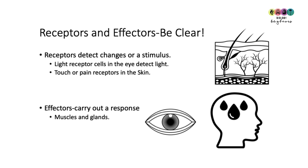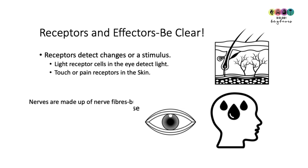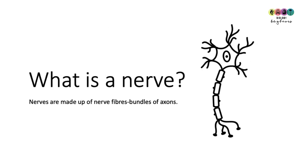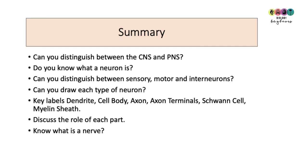Make sure you know what receptors and effectors are. Receptors detect the changes or the stimulus, whereas effectors carry out the response — they're generally muscles or glands. Finally, just know what a nerve is: it's made up of many nerve fibres, bundles of axons.